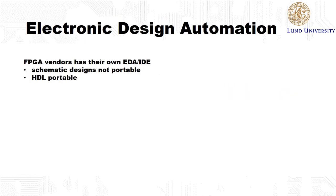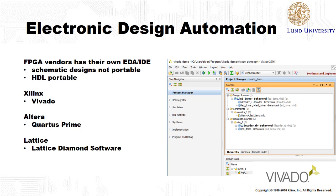When it comes to FPGAs, each vendor has its own electronic design automation tool, or EDA tool, which only works with their FPGAs. Some examples of EDAs are Xilinx Vivado, Altera's Quartus Prime, and Lattice Diamond Software. However, all these EDAs follow the same design flow as presented in this lecture. In recent years, FPGA vendors have also started to offer different packages of their design tools suited for specific applications, such as communications, artificial intelligence, and image analysis.